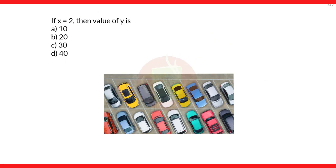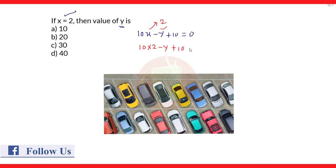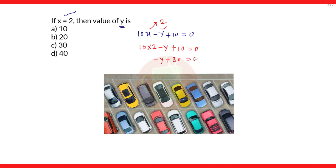Next question: if x equals 2, find the value of y. Using 10x minus y plus 10 equals zero, substitute x equals 2: 10 multiplied by 2 minus y plus 10 equals zero, giving 20 plus 10 minus y equals zero, so 30 minus y equals zero. Therefore y equals 30. Option C is correct: when x equals 2, y equals 30.